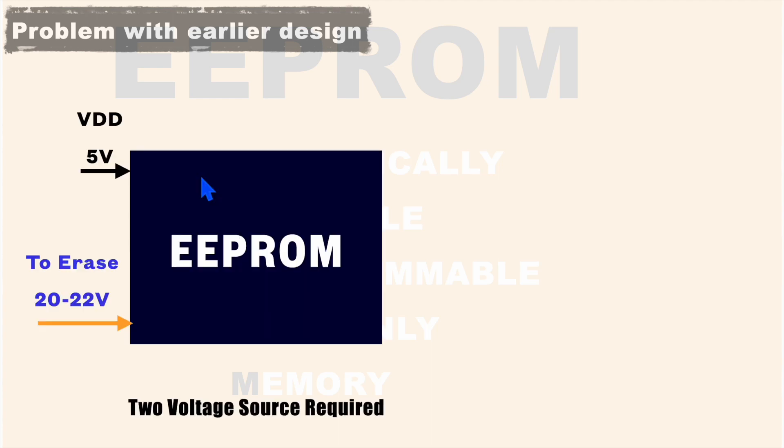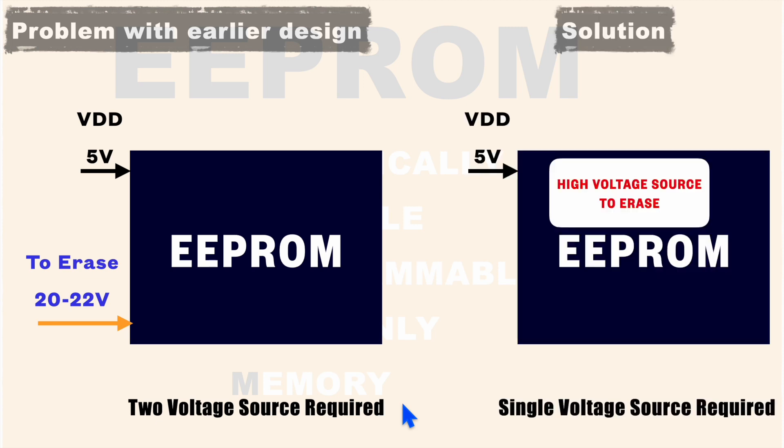So to erase electrically, earlier an external supply was required of 20 to 22V which would erase the memory. So the requirement of two voltage sources was a bigger problem. To overcome this problem, extra circuitry was added to the EPROM itself which takes a single voltage supply and internally generates higher voltage to perform the erase operation.